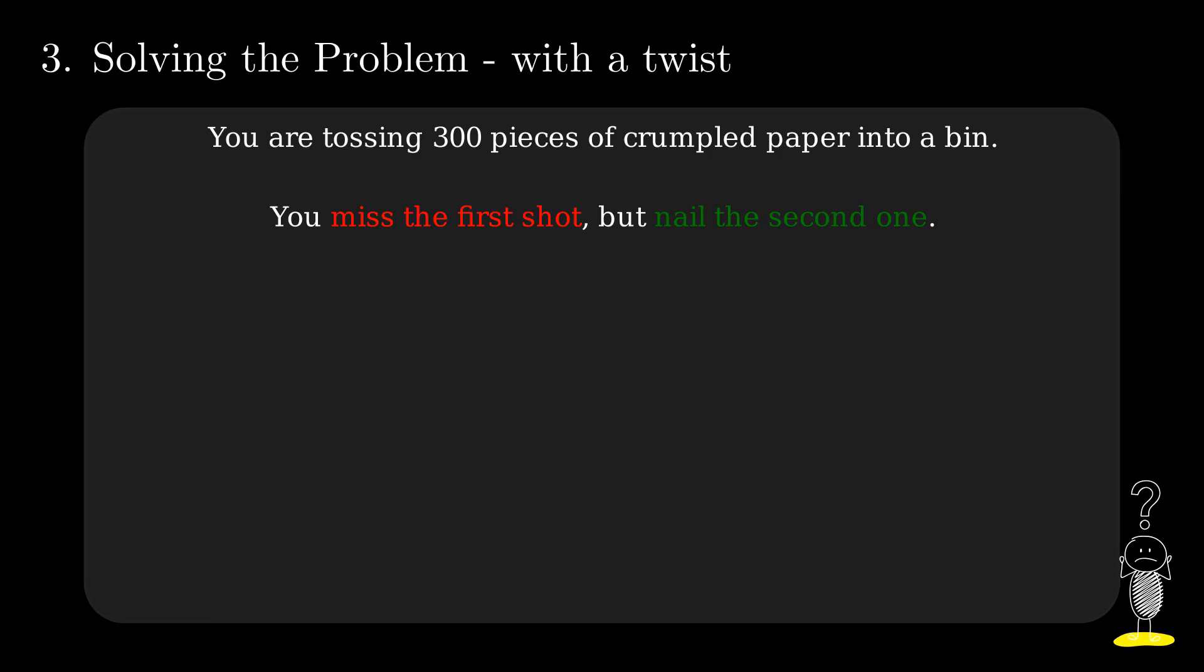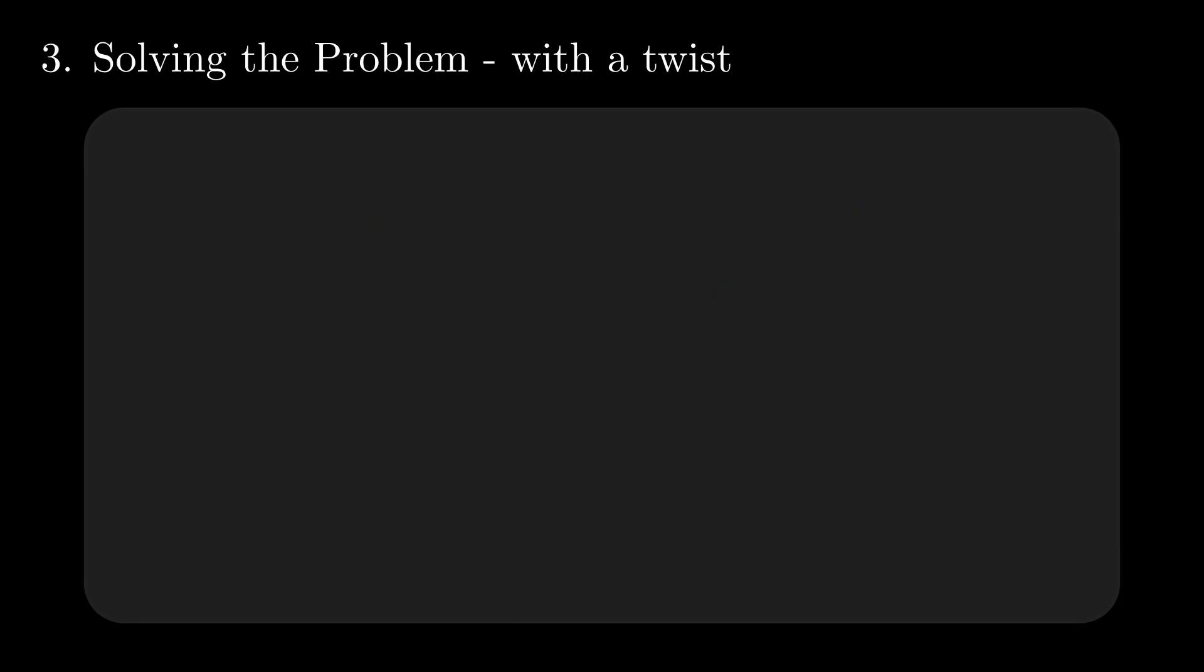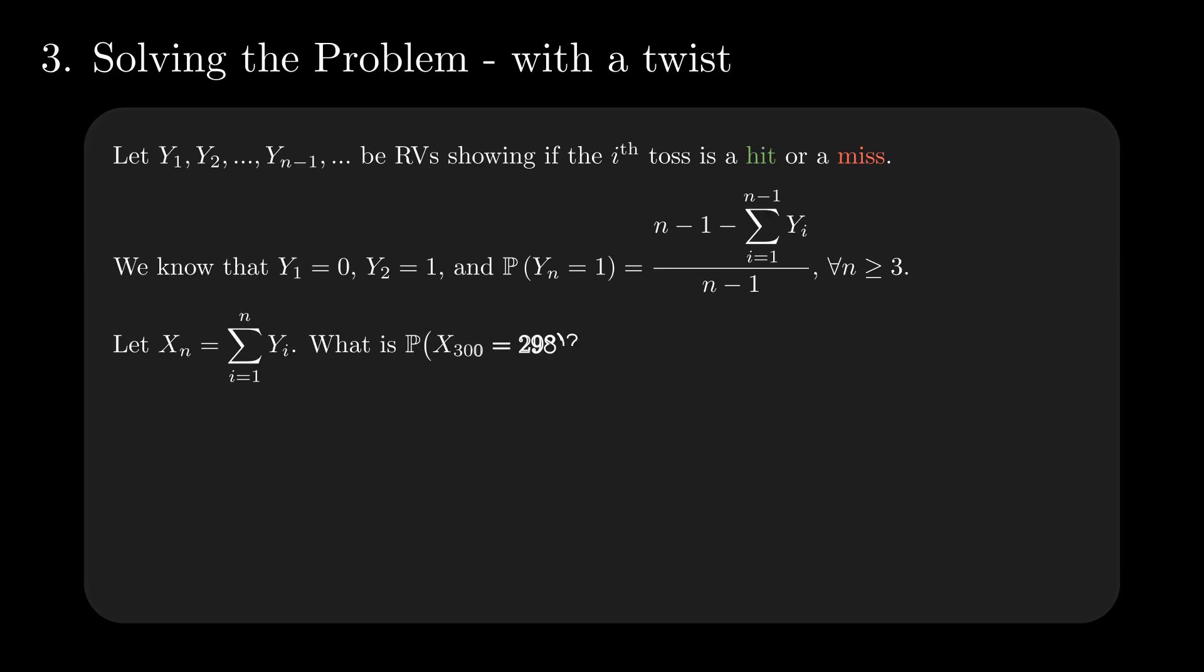What if now you are in a different setting? You start your first two tosses like before, but you are nervous and your chance of hitting is the cumulative miss rate. How does the probability of 298 hits change?